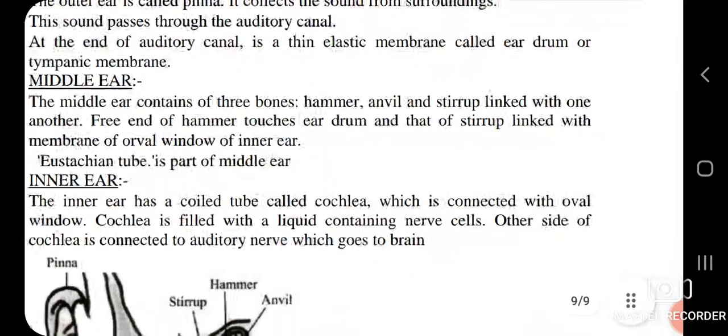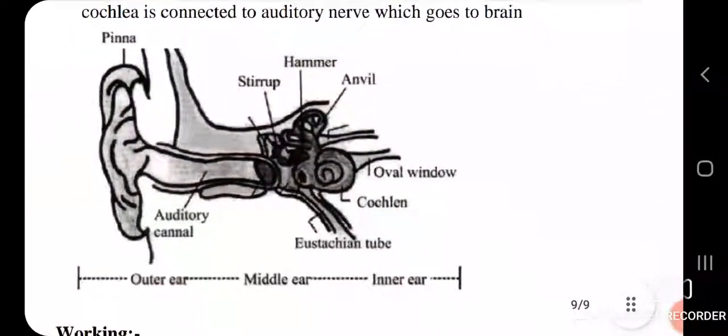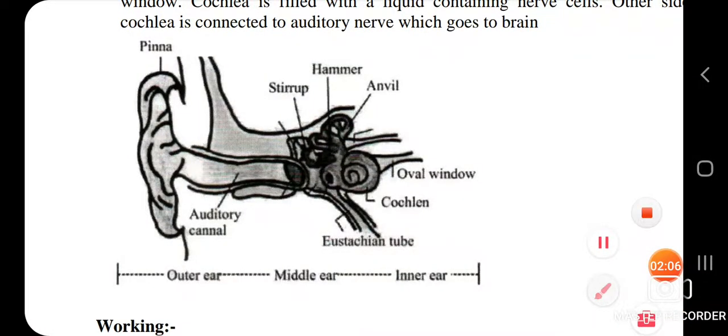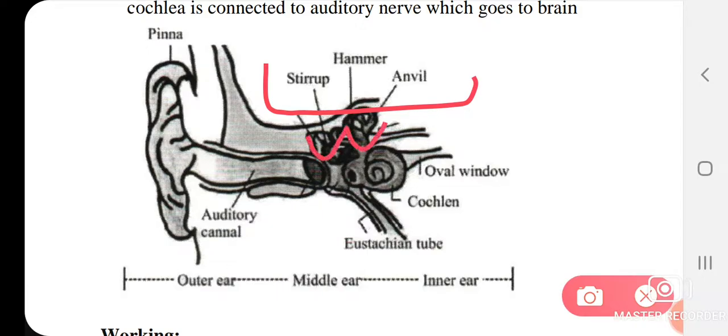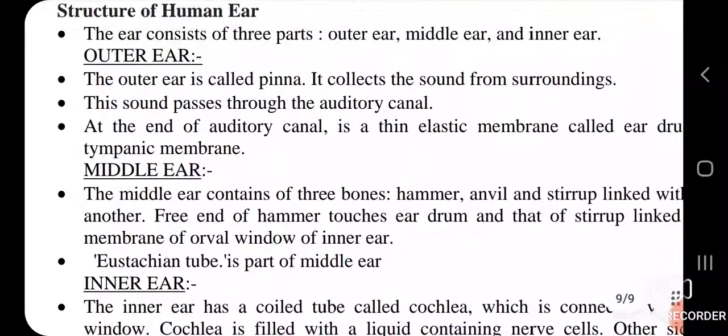Eustachian tube is a part of middle ear. So we will clarify this from this diagram. In our middle ear, there are three main things: stirrup, hammer, and anvil. These three are interconnected, along with the oval window, and the Eustachian tube is also part of the middle ear.